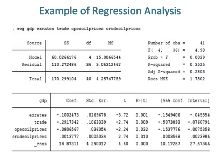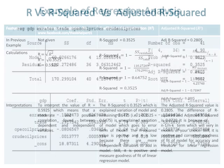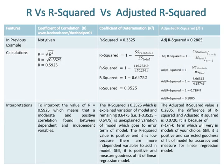Here is an example of regression analysis of time series data using Stata software. In this example, R is not given directly, while R-squared is equal to 0.3525 and adjusted R-squared is equal to 0.2805. To calculate R from R-squared, take the square root of R-squared; putting in the value gives R equal to 0.5925.